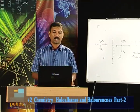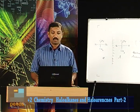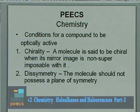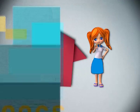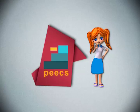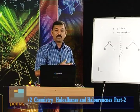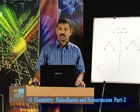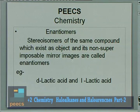The conditions for a compound to be optically active: chirality — a molecule is said to be chiral when its mirror image is non-superimposable on it; and dissymmetry — the molecule should not possess a plane of symmetry. Enantiomers are stereoisomers that exist as an object and its non-superimposable mirror image.